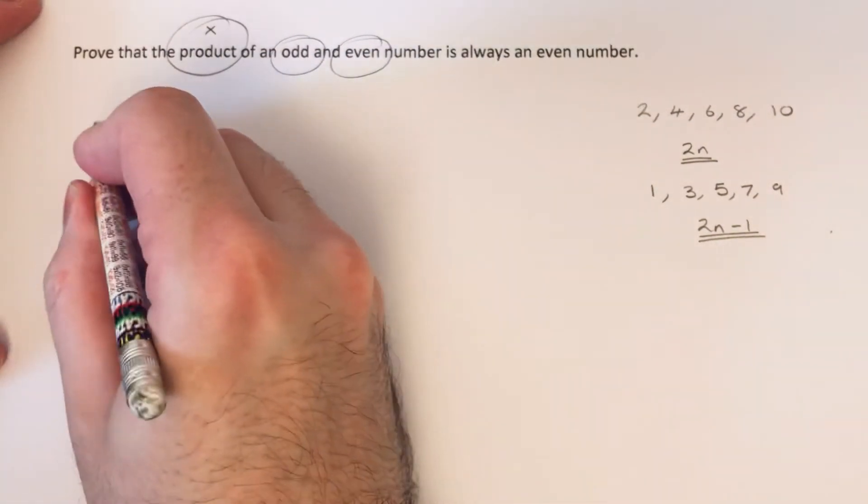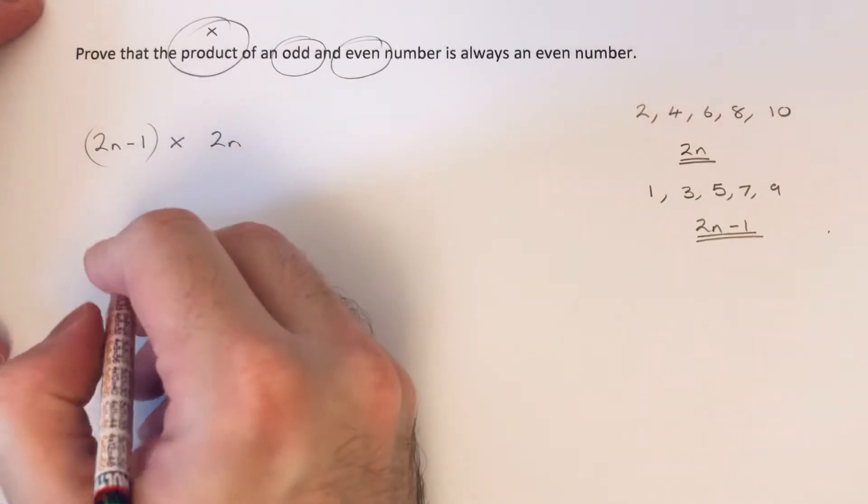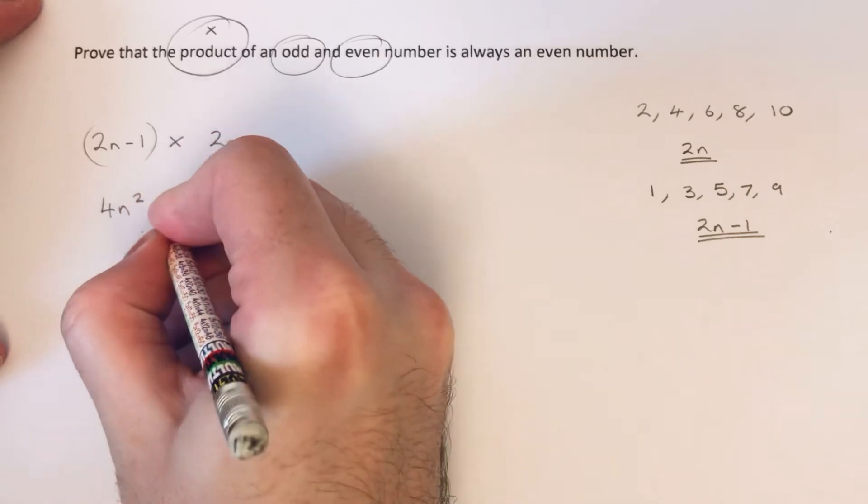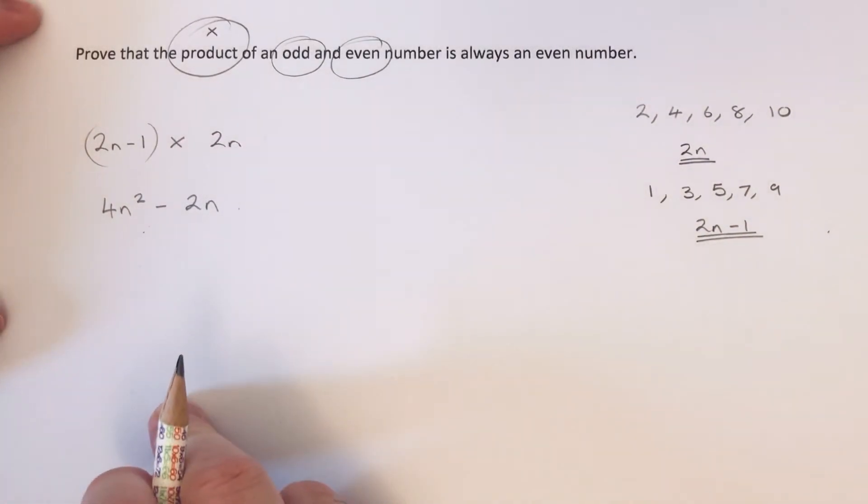I just need to put this in a bracket. So if you multiply 2n by 2n minus 1, we get 4n squared minus 2n. Now we've got to show that this is an even number.